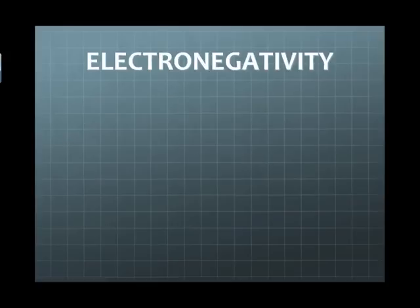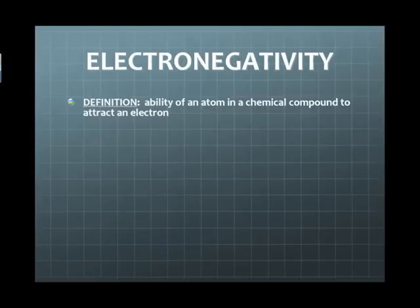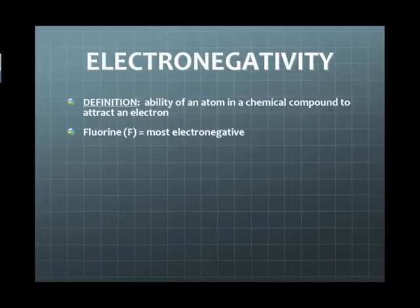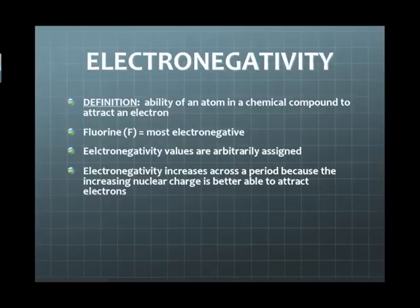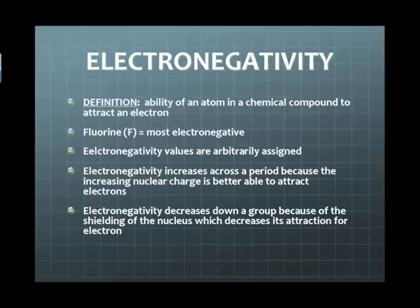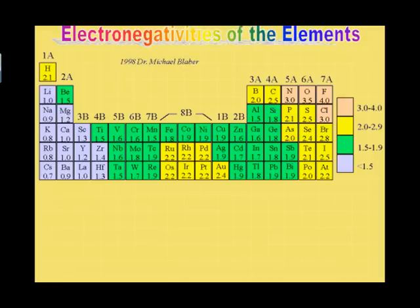Now let's take a look at electronegativity. Electronegativity is the ability of an atom in a chemical compound to attract an electron. Fluorine happens to be the most electronegative element in the periodic table. Electronegativity increases across a period because the increasing nuclear charge — every time you add a proton — pulls electrons into that atom, increasing its ability to draw an electron in. As you go down a group, every time you add an energy level you're shielding the nucleus, blocking the nuclear charge from pulling electrons in, so electronegativity decreases going down a group.